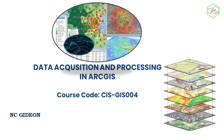Data acquisition and processing in ArcGIS. This is a course called CIS-CGIS-004. We want to look at how we can acquire data and process it into an ArcGIS environment. For you to be able to produce your model and do a lot of things in ArcGIS, you need to acquire data. Acquiring the right data is actually doing the right model, so this module will be looking at that.